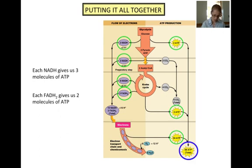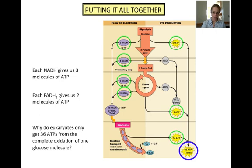Totaling up all the ATP generated during aerobic respiration, we see that in a prokaryote there are 38 molecules of ATP made for each molecule of glucose that enters the cycle. Why do you think it is the case that eukaryotes get only 36 molecules of ATP from each molecule of glucose that is oxidized? Think about this question and we'll talk about it in the next class.